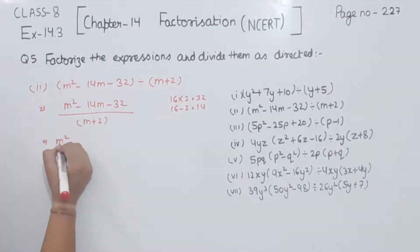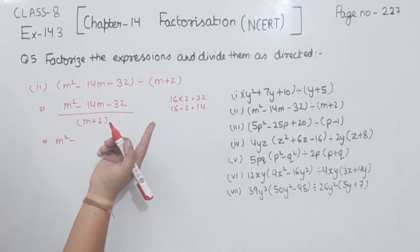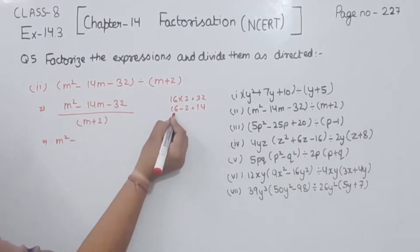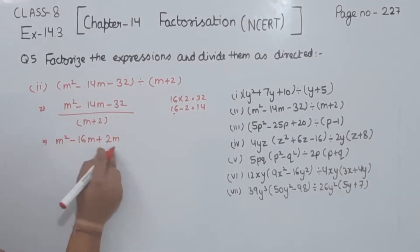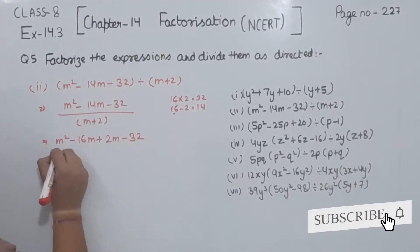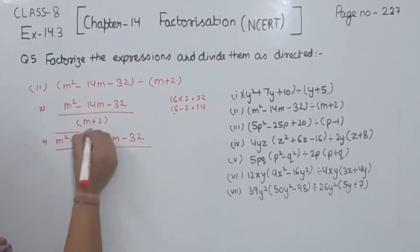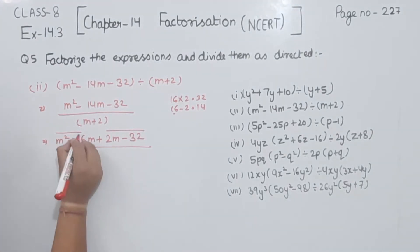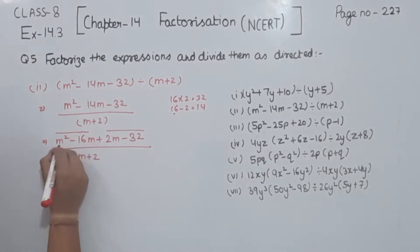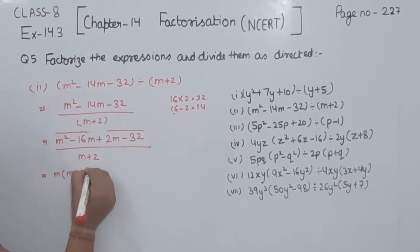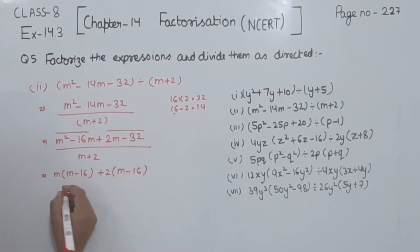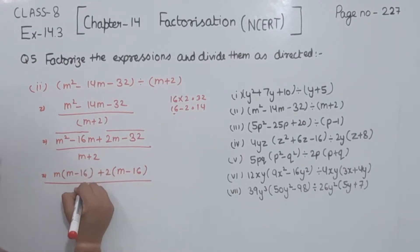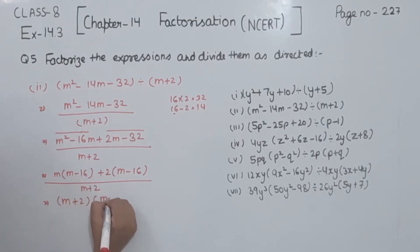So I am going to write here m squared minus 16m plus 2m. Plus minus minus gives minus 14m, minus 32. Now I am going to write here m plus 2. Taking m as common from the first two terms gives m minus 16. Taking 2 as common from the last two terms gives m minus 16. These two are the same, so I write this only one time. The other factor is m plus 2, and here we are having m minus 16. This is divided by m plus 2.